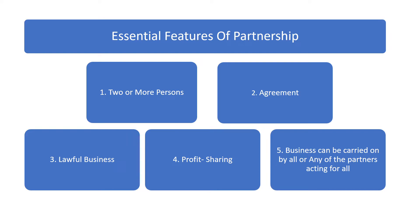There must be profit and loss sharing in an agreed ratio among the partners. It is essential that all partners must share losses also. Business can be carried out by all the partners together or, on behalf of all the partners, only one partner can work. In other words, partners are agents as well as principals: they are agents when they represent other partners and bind them through their acts, and they are principals when they are bound by the acts of another partner.